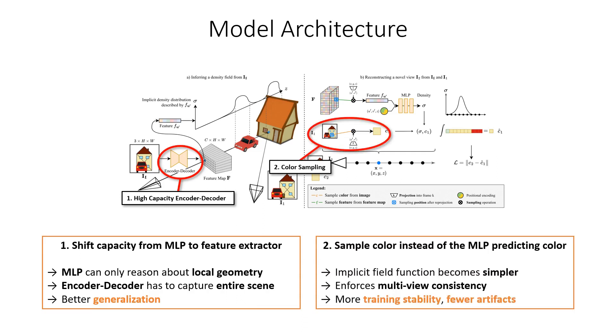Second, by sampling color instead of having the MLP predict color, the implicit function the MLP has to model becomes significantly simpler. It therefore further boosts training stability and generalization. Additionally, color sampling enforces multi-view consistency between different frames. Therefore, the predicted geometry is trained to be more accurate and we get fewer artifacts, even with a small number of views.